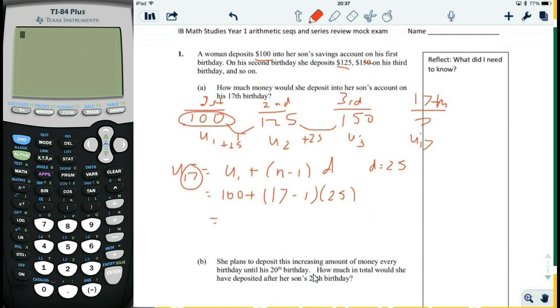100 plus 17 minus 1 times 25. So 100 plus 16 times 25 is 500. So for his 17th birthday, she gives him $500.